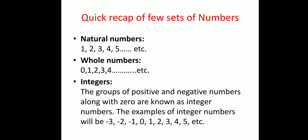Next come the whole numbers. If I include 0 in the set of natural numbers, then this particular set of numbers will be known as whole numbers. Next, the set of integers plays a crucial role in this chapter on rational numbers, because rational numbers mostly rely on integers.